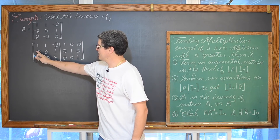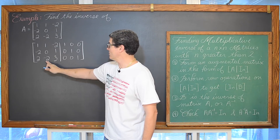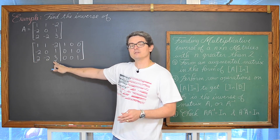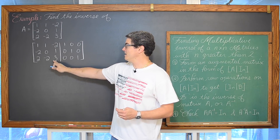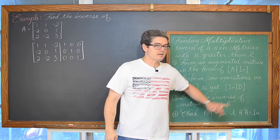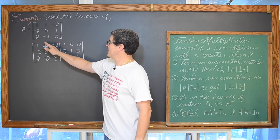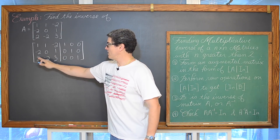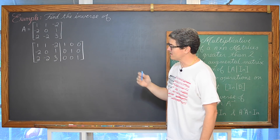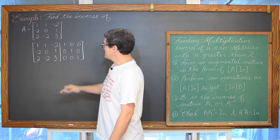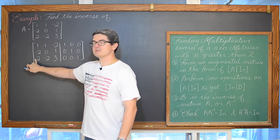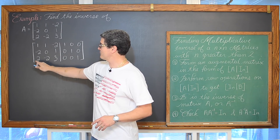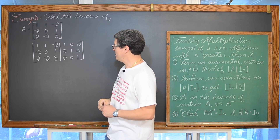We are going to work on getting this bottom right-hand triangle to be all zeros. Then we are going to get this last element in the third row to be the one we need for the identity matrix. Then work our way up in the upper right-hand corner and get all those values to be zeros so we have that row of ones with all the other elements on the left-hand side equal to zero.